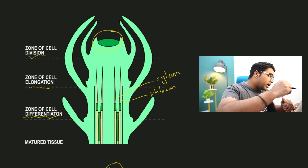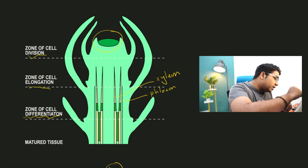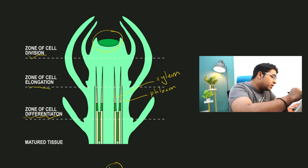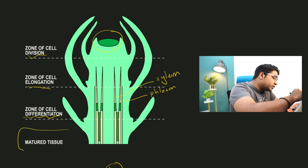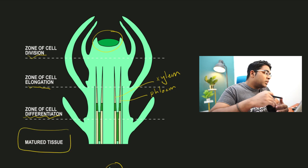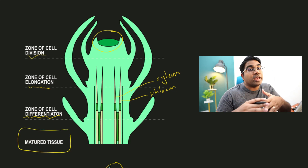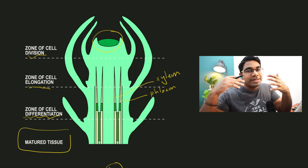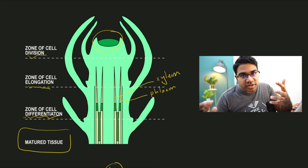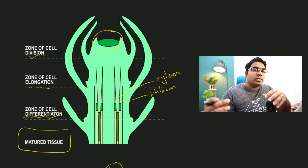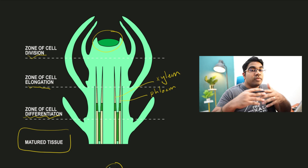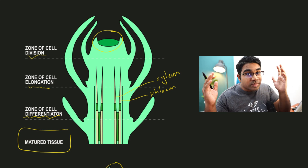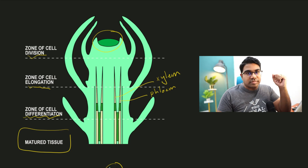After the zone of cell differentiation, we have reached an area of permanent tissue. Permanent tissue consists of mature tissue — plant tissue that has already differentiated and is therefore able to perform various specific functions.